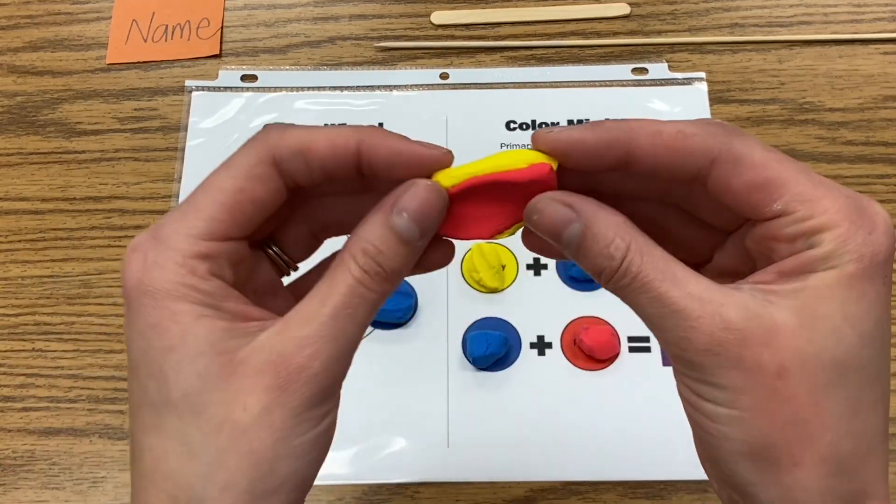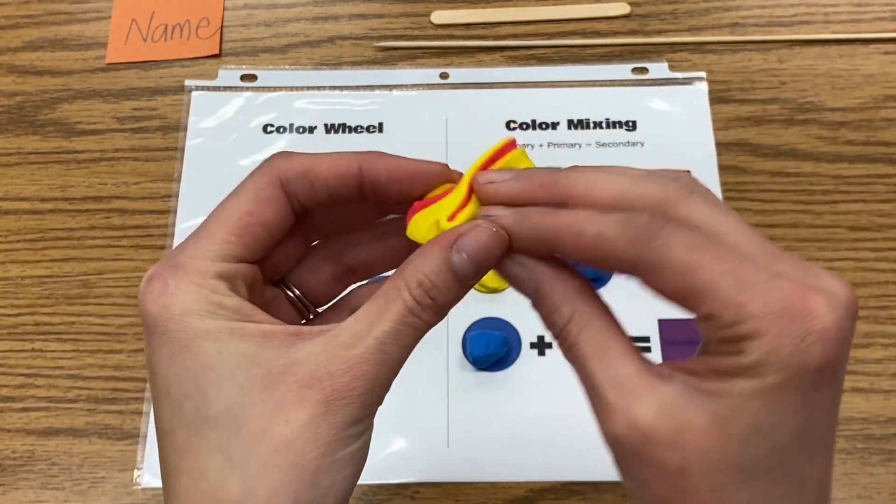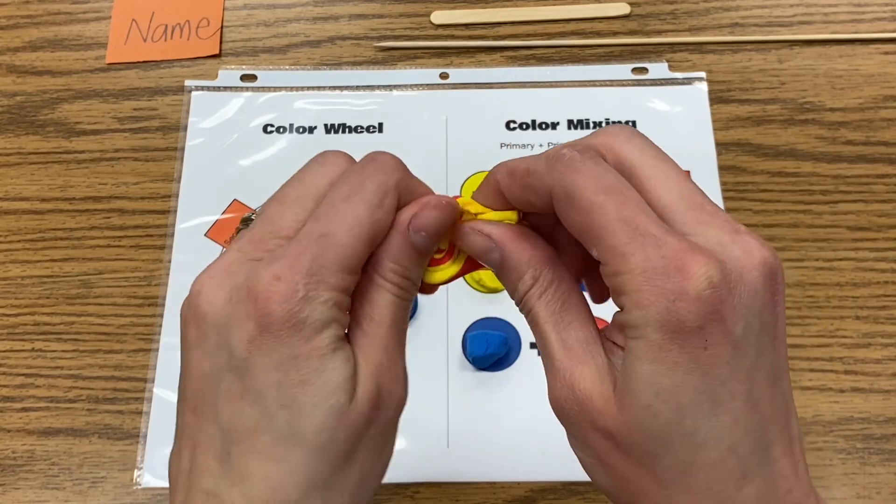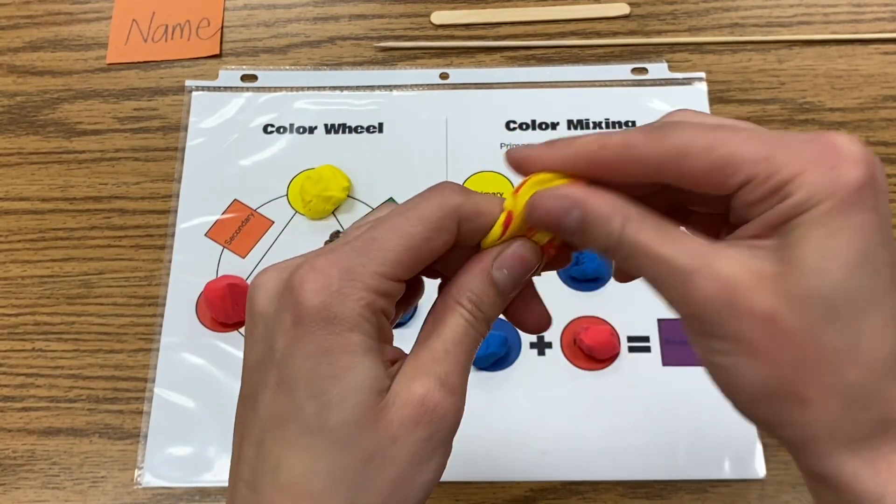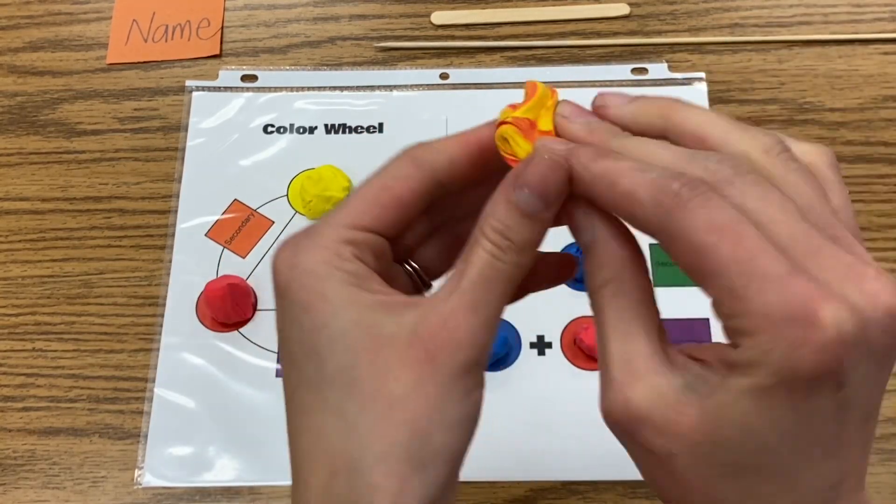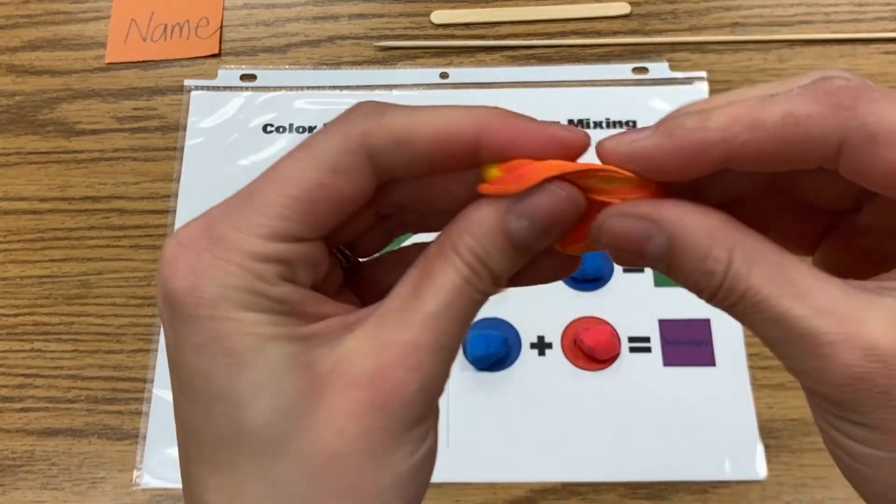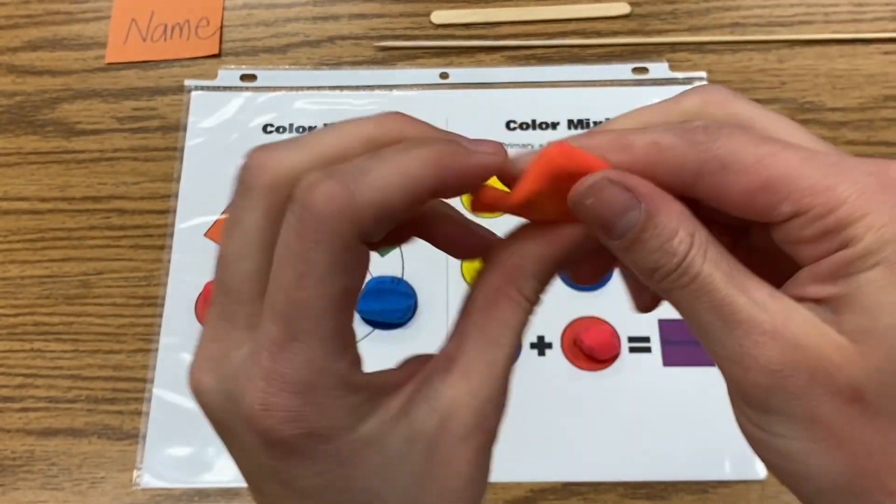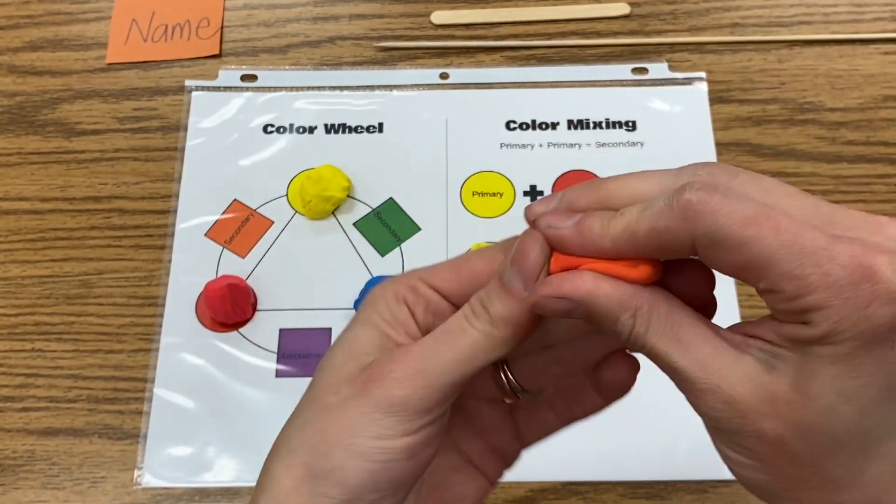So when I mix red and yellow I should get orange. You can smush them together, pull them a little bit, and you're going to pull and twist and massage. You're going to keep on mixing your red and yellow until you notice that it's become orange—starting to see that orange mixture.